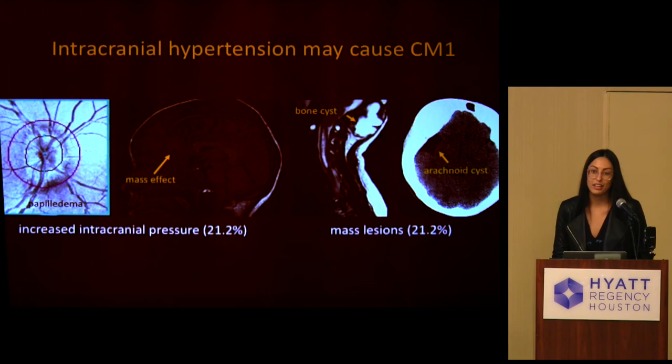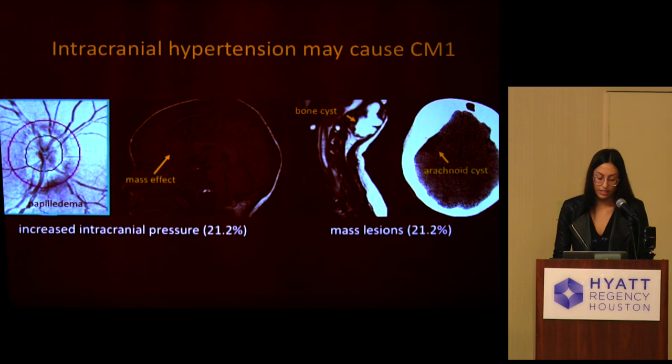We weren't able to look at this statistically because we didn't have lumbar puncture data on these patients. But we did find findings that could suggest that increased intracranial pressure may also cause Chiari in this population — patients who had papilledema on OCT and on physical exam, patients with evidence of mass effect on imaging, as well as mass lesions including bone cysts and arachnoid cysts.